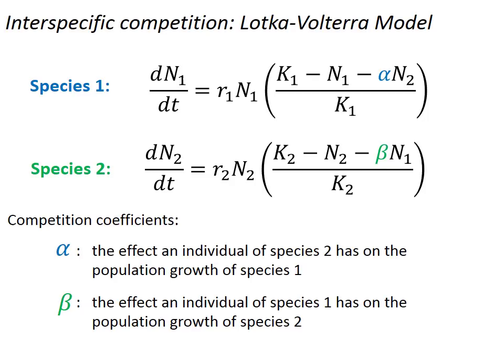So we can do the exact same thing to the species 2 equation, but we will use the coefficient beta and then multiply that by n1. Now, if this seems a little confusing or a little abstract, I completely understand. So let me just present a quick example that might help put things into perspective.